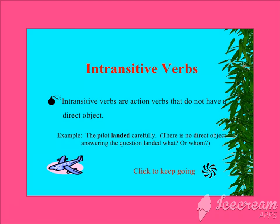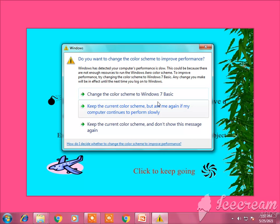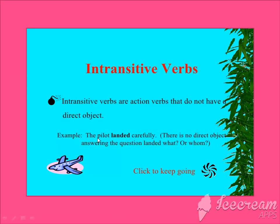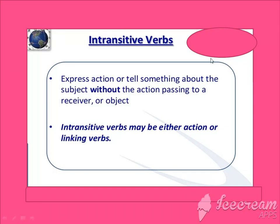But in intransitive verbs, they do not have a direct object. That is why you do not know when, what, or whom — you have to answer those yourself. For example: 'The pilot landed carefully.' There is no direct object answering the question 'landed what?' Intransitive verbs express action or tell something about the subject without the action passing to a receiver or object.